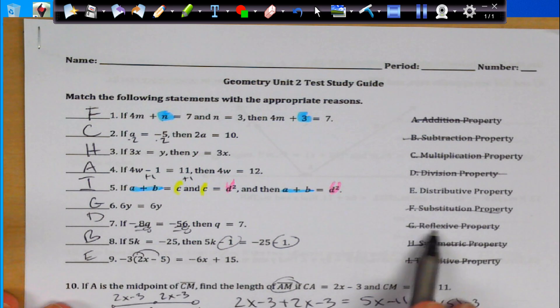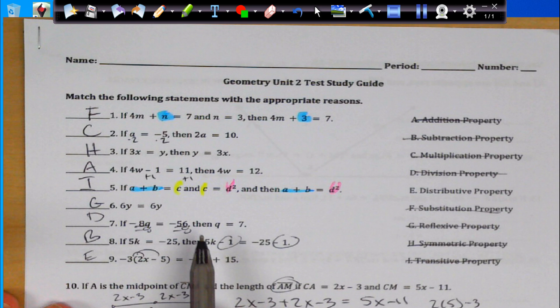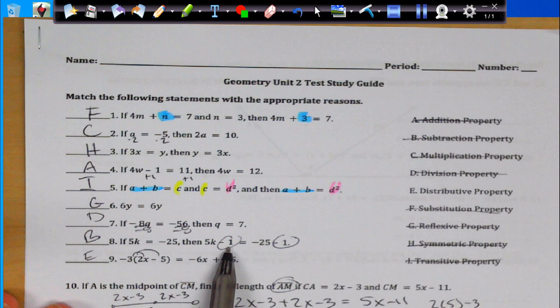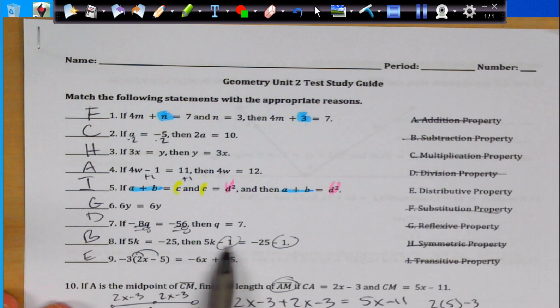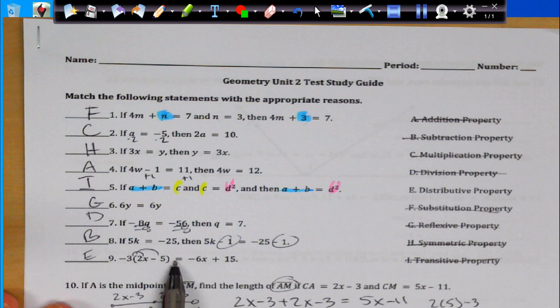Property G, 6y equals 6y. That's reflexive property. They're equal to each other. And D, negative 8 and negative 8, we divide and we get Q equals 7, so that's division property. Here, we're just subtracting negative 1 from both sides. So, that's subtraction property. And then, last but not least, distributive property.